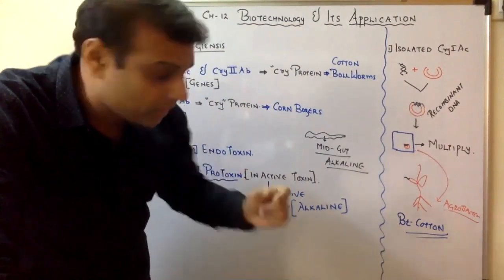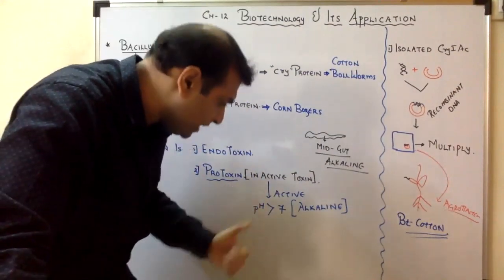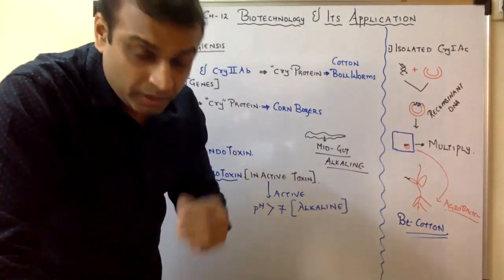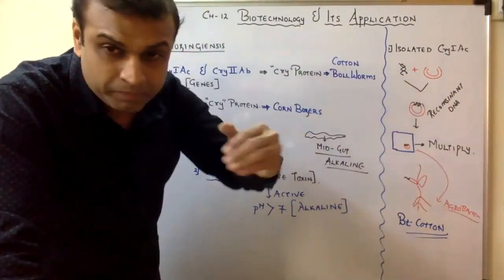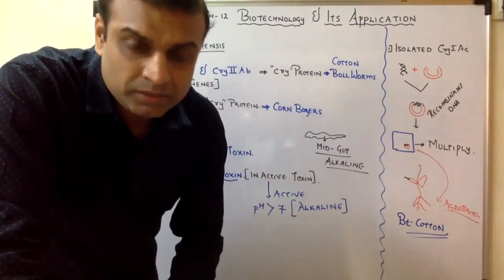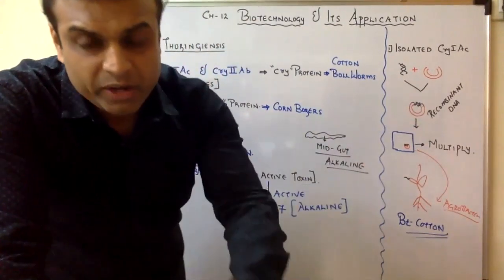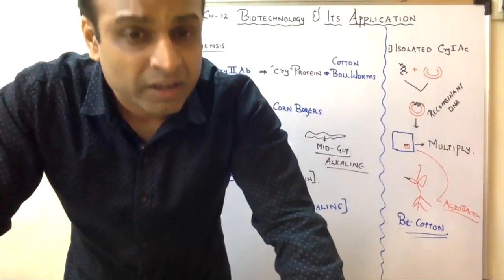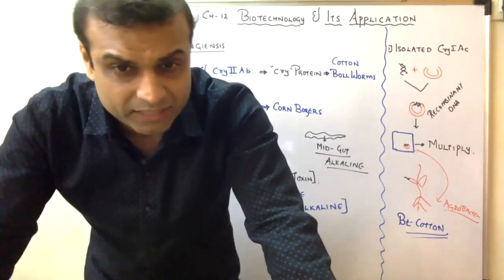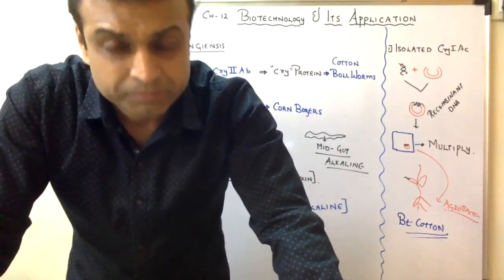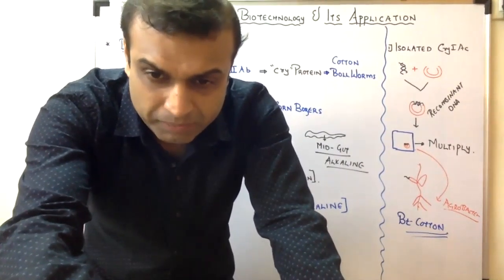The most important points to remember: crystalline protein is an endotoxin and it is a protoxin — it will be activated only when the pH is greater than 7. With this we complete our first lecture of Biotechnology and its Applications. In the next lecture we will talk in more detail about the application of biotechnology, including transgenic tobacco. Before watching the second lecture, please read about transcription. Take care, god bless you.